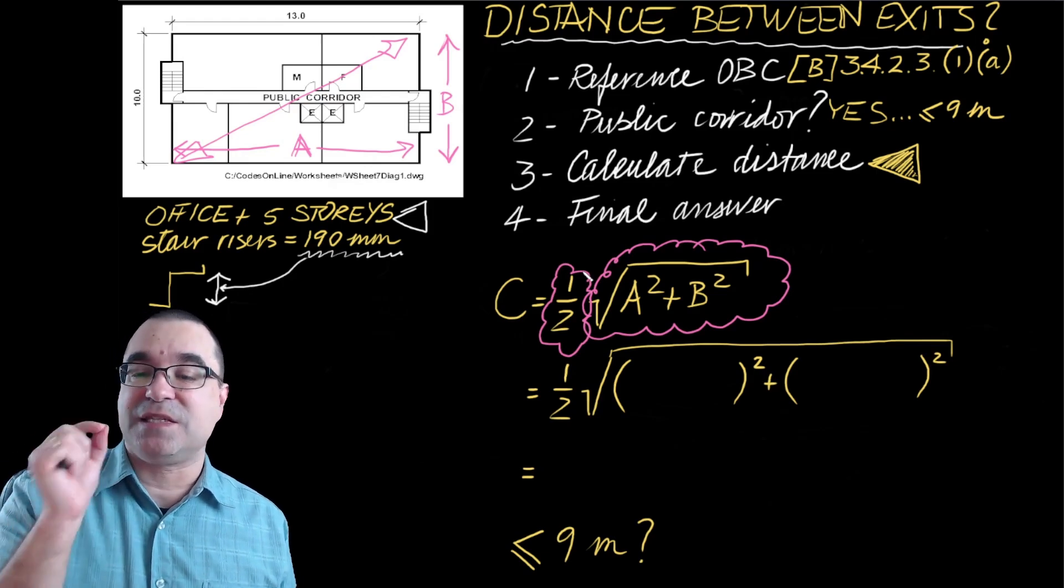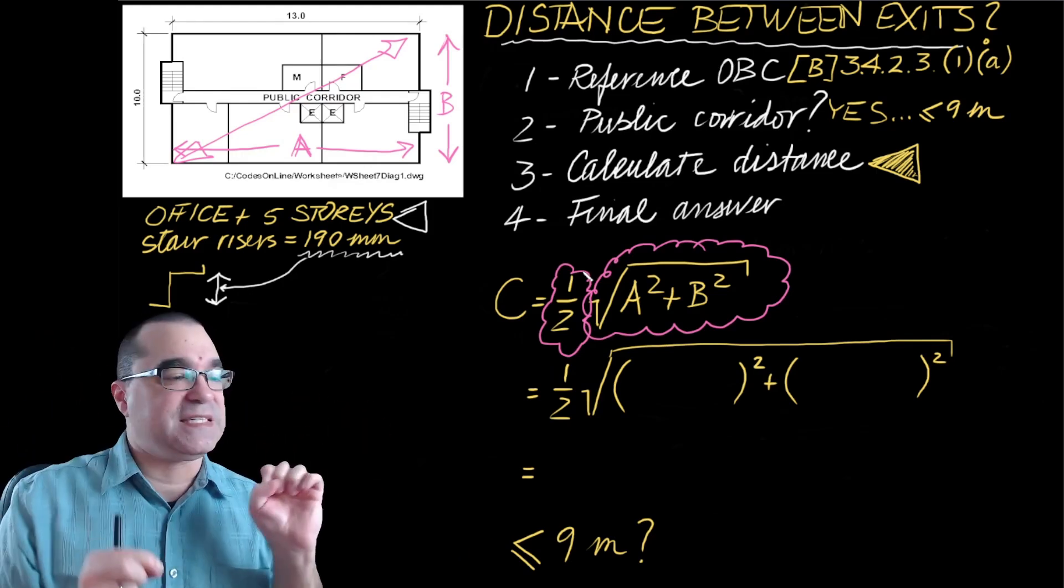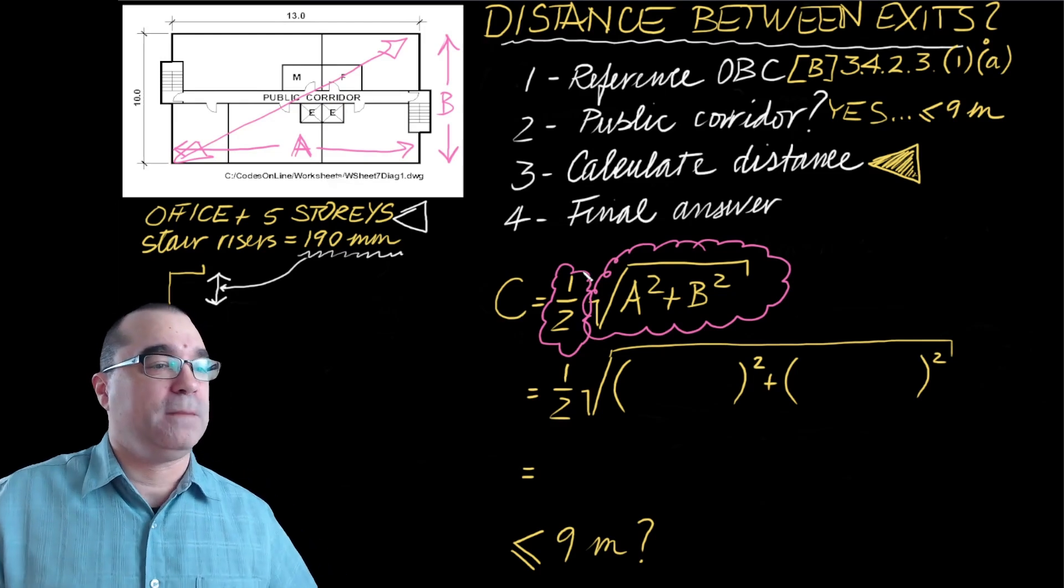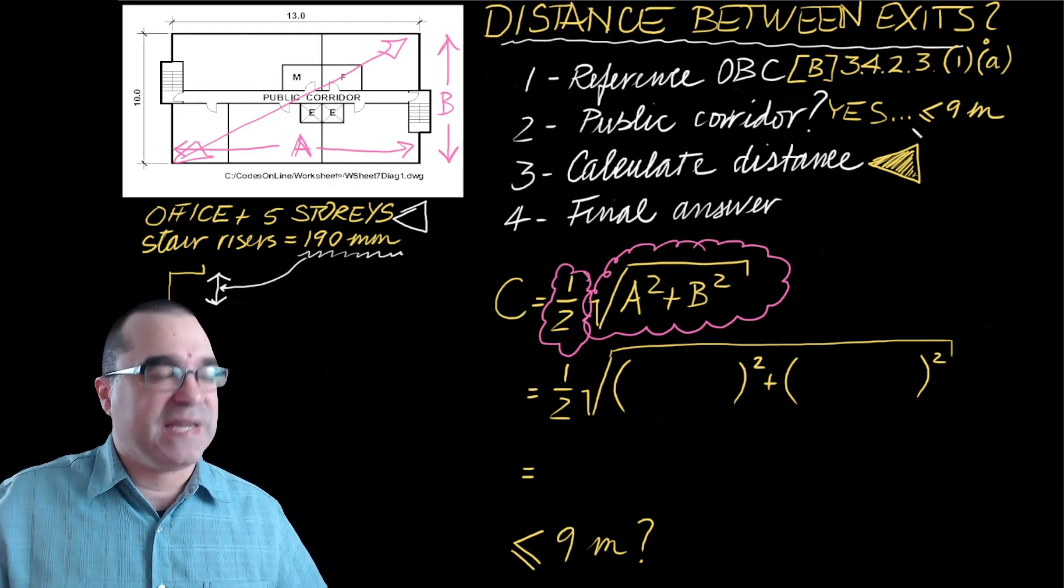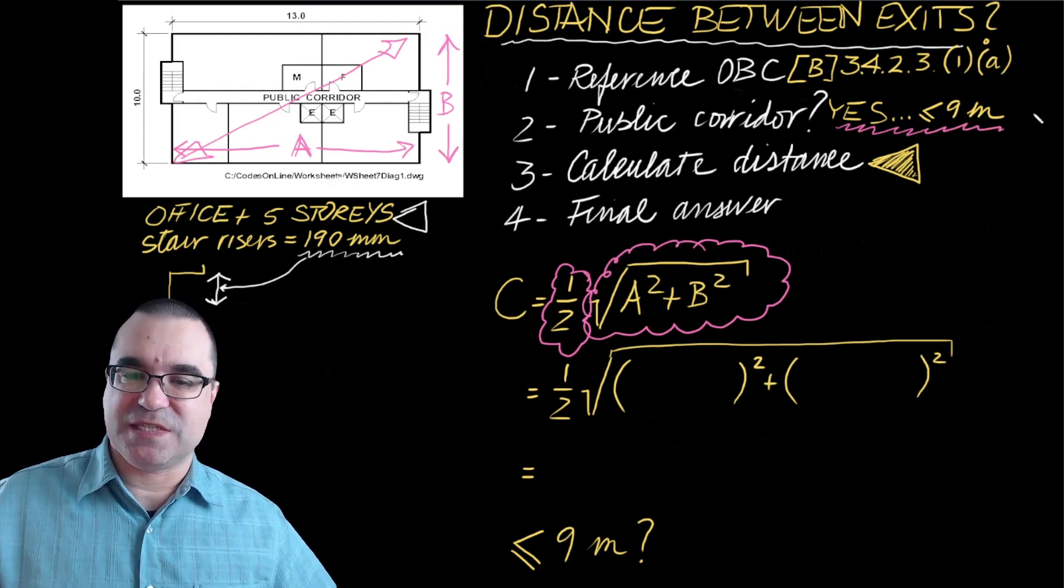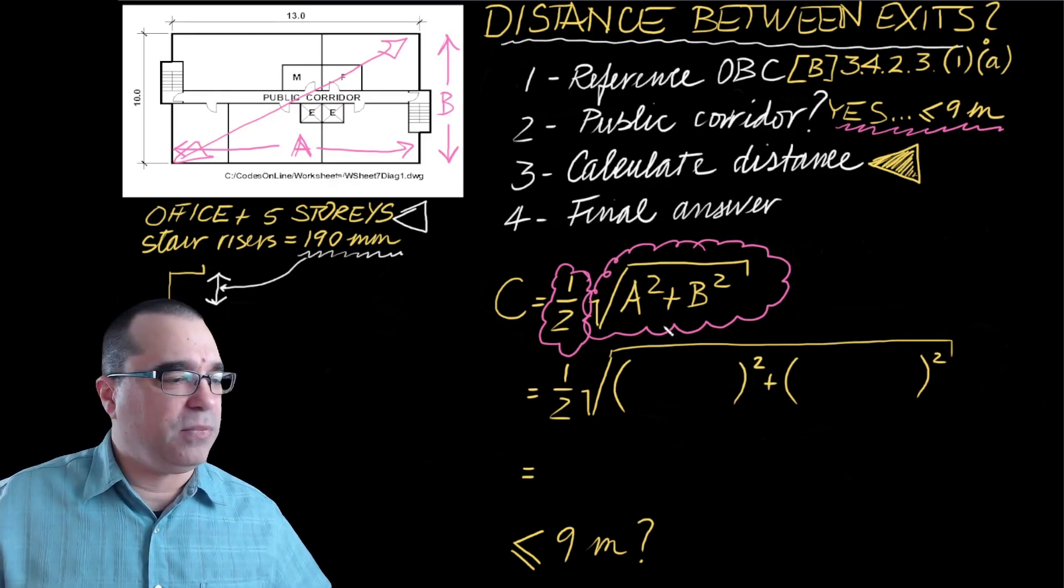On top of that, we also have to take that value and divide it by two, because the building code says that's the maximum allowable distance between exits to account for smoke. We also figured out that because there is a public corridor, the maximum distance this can be is nine meters.